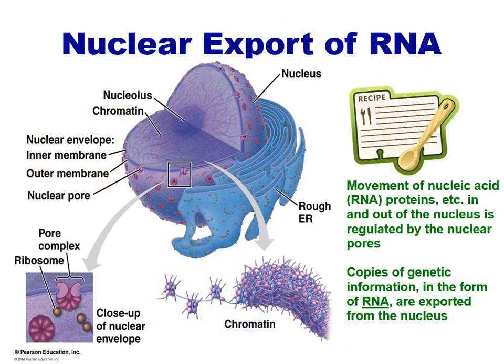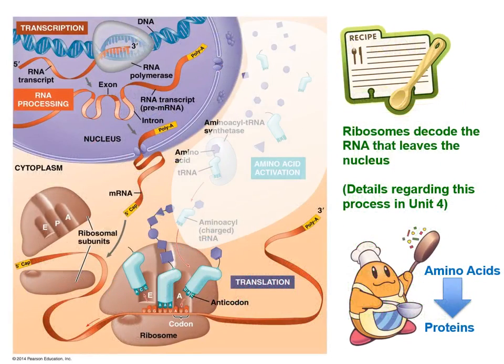The RNA copy of the genetic information leaves the nucleus and will then travel to a ribosome, either a ribosome free-floating in the cytoplasm or one that's attached to the endoplasmic reticulum. Here is a somewhat busy slide depicting the creation of the RNA copy and its export from the nucleus and association with the ribosome.